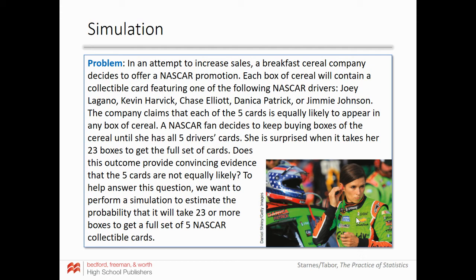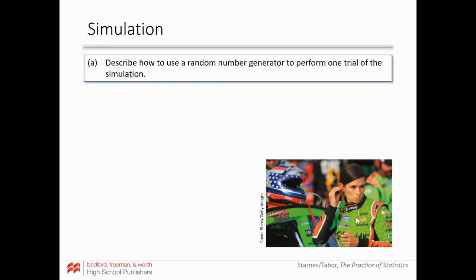Here's another simulation example. A breakfast cereal company offers a NASCAR promotion — each box contains one of five collectible cards: Joey Logano, Kevin Harvick, Chase Elliott, Danica Patrick, and Jimmie Johnson. The company claims each card is equally likely to appear. A NASCAR fan keeps buying boxes until she has all five cards, and is surprised when it takes 23 boxes. Does this provide convincing evidence that the five cards are not equally likely? We'll perform a simulation to estimate the probability it takes 23 or more boxes to complete the set.